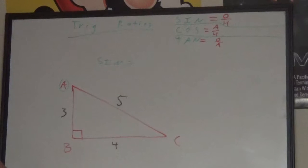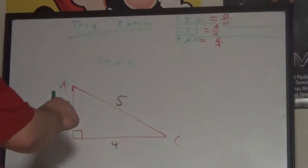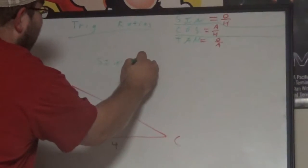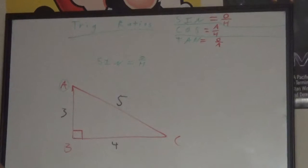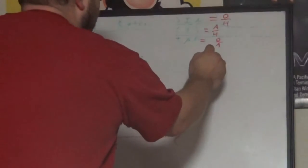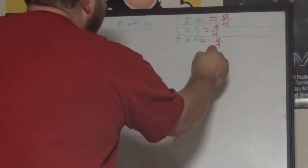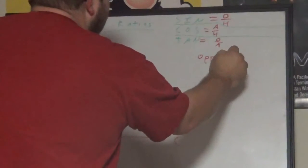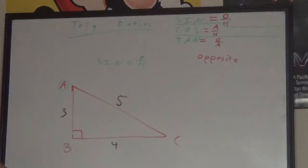These are always abbreviated on your calculator with the first three letters. Sine is always O over H, so we have to determine what is O and which side is H. O stands for opposite - that is the side across from your angle that you're finding the measurement of.